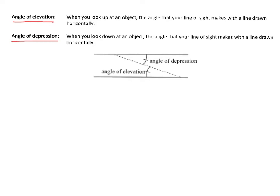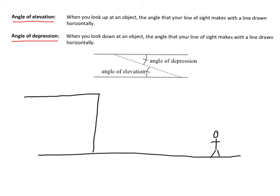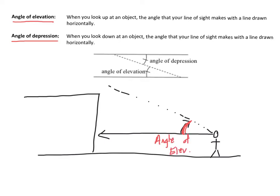So before I run through the exact definitions, let's sketch out a little picture. Let's say someone down here is looking up at the top of this cliff. Initially they were looking straight ahead while walking there, then they stopped, tilted their head up a certain number of degrees, and looked up at the top of the cliff. So what I've drawn right here — this angle — is your angle of elevation. Elevation: going up in elevation, you're looking up at a point higher than you.